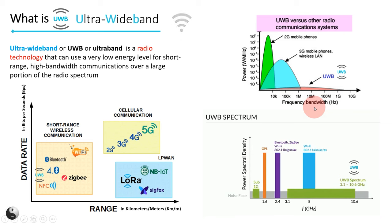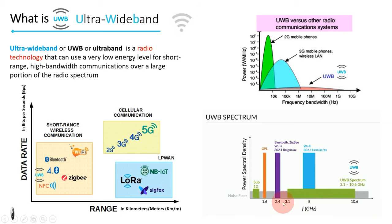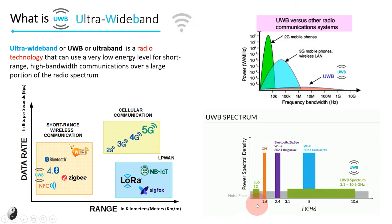This spectrum of ultra-wideband shows UWB ranges from 3.1 GHz to 10.6 GHz. Whereas there is a standard 2.4 GHz band assigned for Bluetooth, Wi-Fi, and ZigBee. Wi-Fi 5 has the 5 GHz band, and GPS comes with 1.6 GHz frequency. You can see ultra-wideband signal has lower spectral density than other radios, but slightly higher than the noise floor. So there is no chance of interference with other technologies.